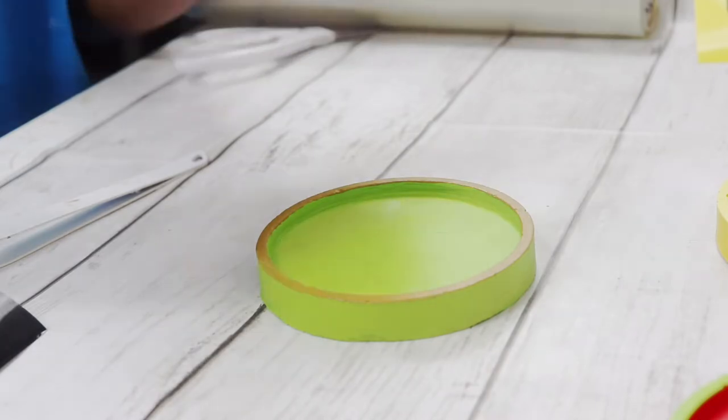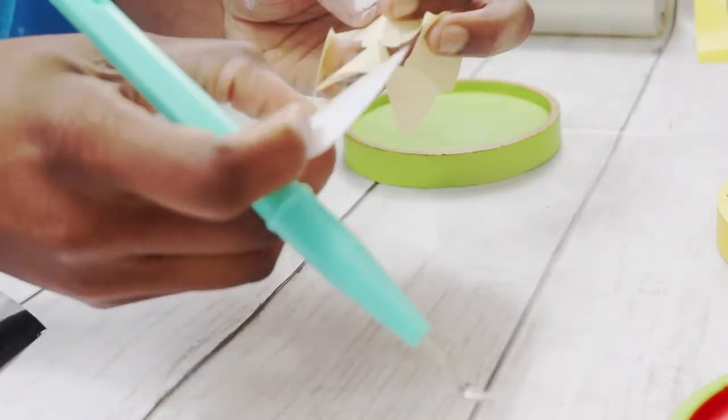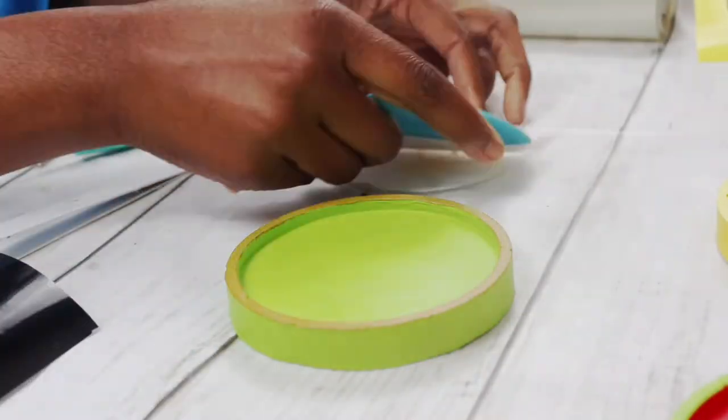All right, and here is the kiwi. This one was kind of a little bit more difficult. Not the center part, of course. The tiny, tiny, tiny little seeds that I Cricut and cut through my machine. I'm like, ugh.